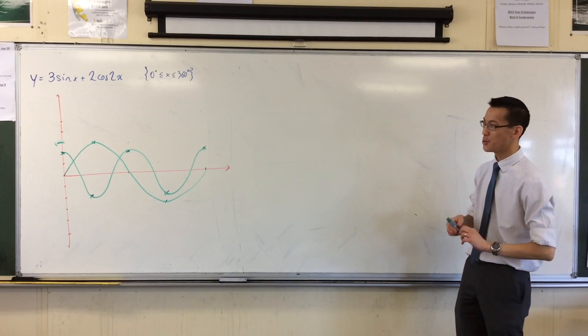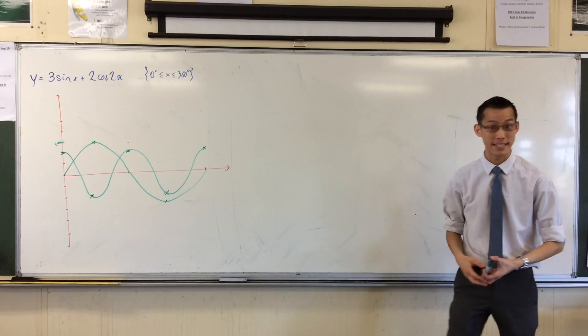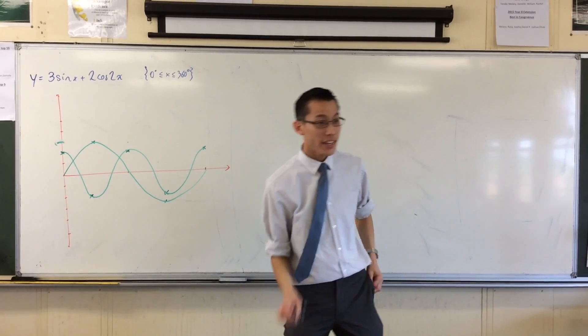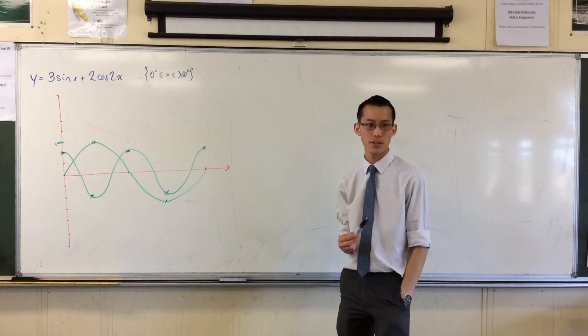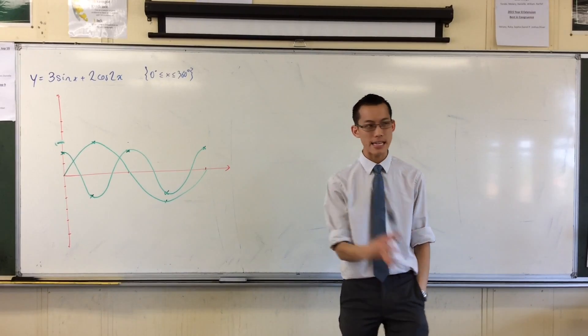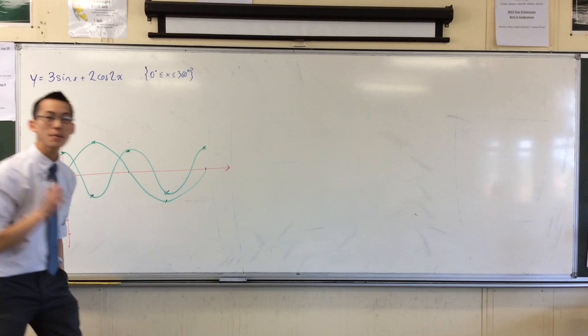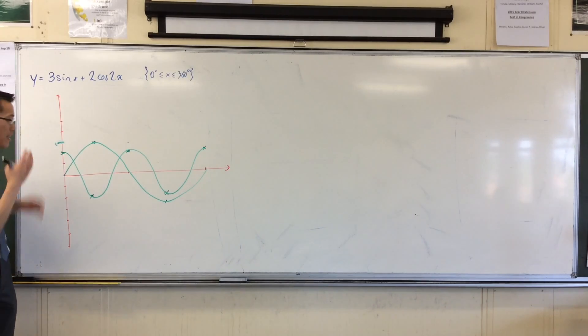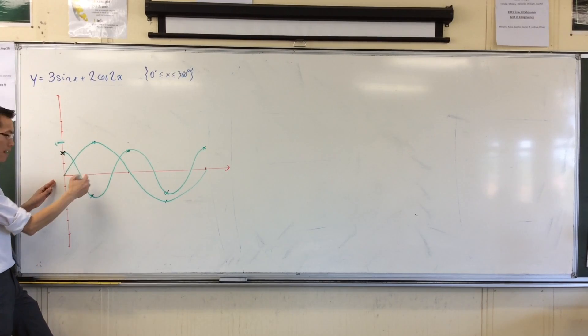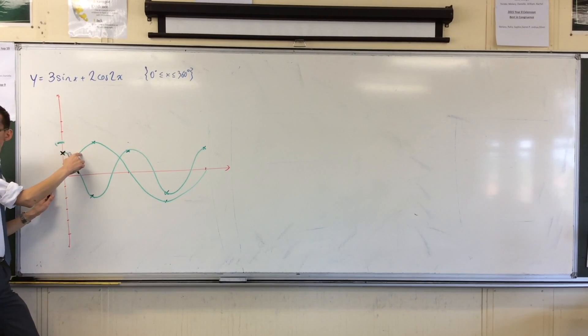So, here are my two wave functions. Here are the two things I'm going to add together. Now, think again when we're doing addition and subtraction of ordinates. Think about the easy places. So think about any roots. Think about the roots. Anytime you get an x-intercept, for example, here, you're going to have 0 plus something. As it happens, it's 2. So 0 plus 2 is 2.